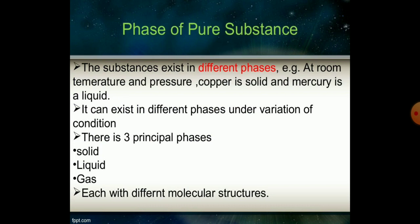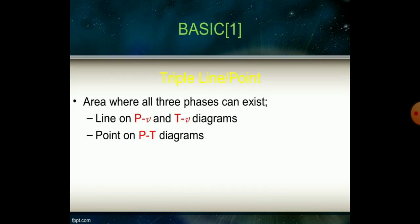The triple point is the area where all three phases can coexist. On a PV diagram and temperature-volume diagram, the triple point is the specific point at which all three phases can exist simultaneously.